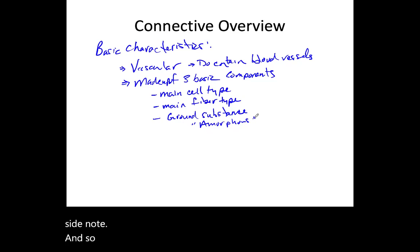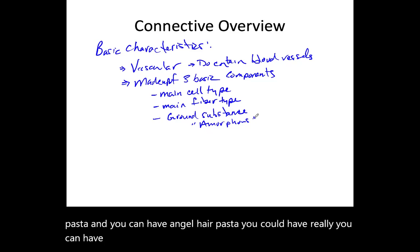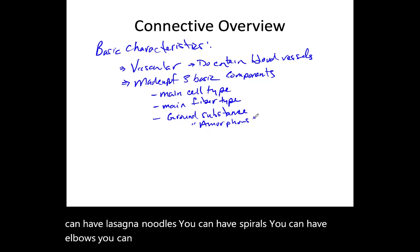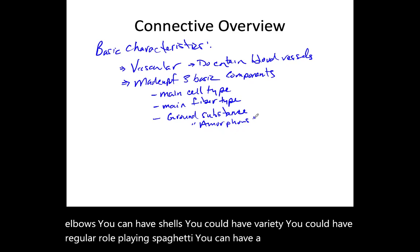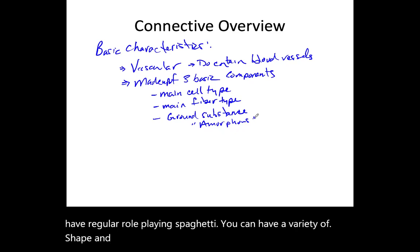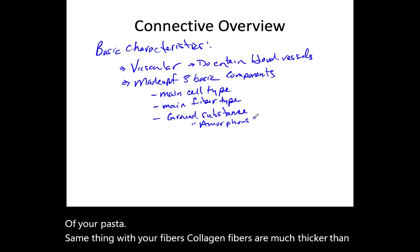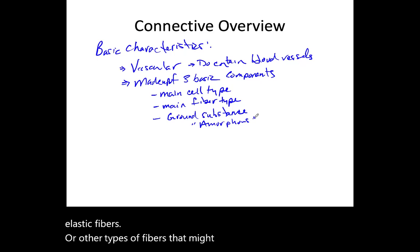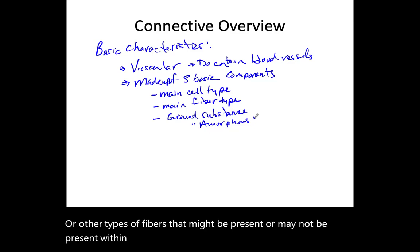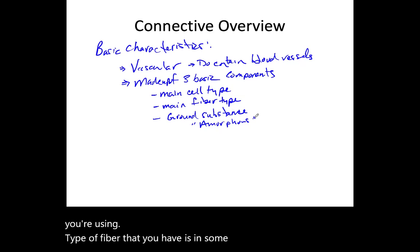You can have a variety of pasta shapes and sizes — angel hair, lasagna, spirals, elbows, shells, regular spaghetti. Same thing with your fibers: collagen fibers are much thicker than elastic fibers. The type of fiber you have is going to define the characteristics and properties of the connective tissue.